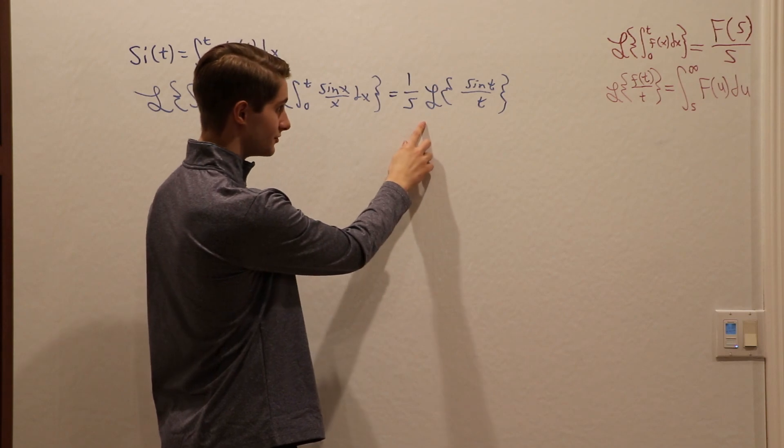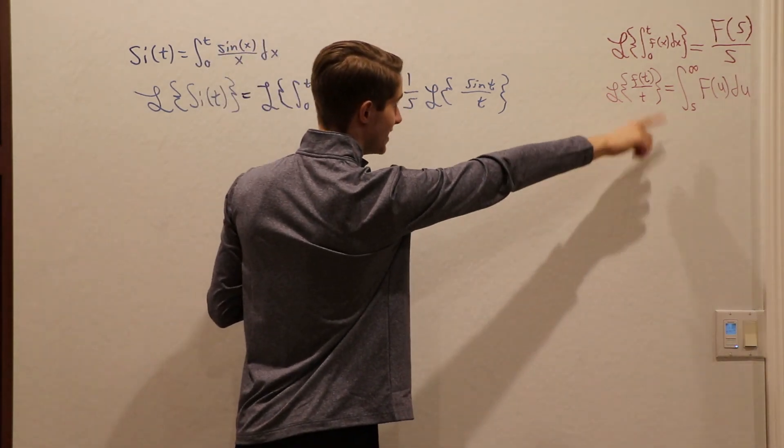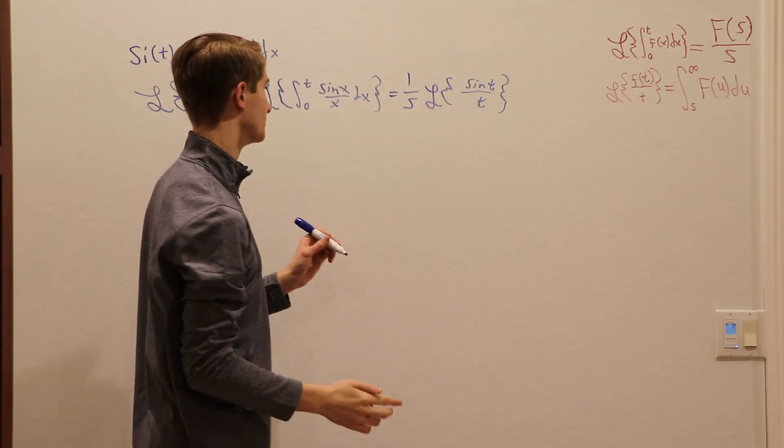Now from here, we can use the fact that the Laplace transform of f of t over t is the integral from s to infinity of f of u du, where f of u is the Laplace transform in terms of u.